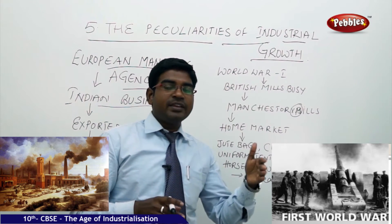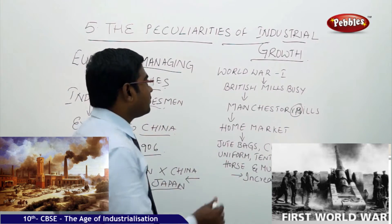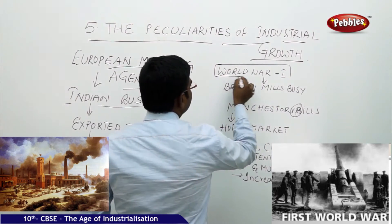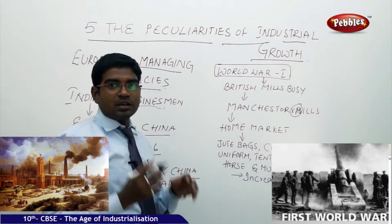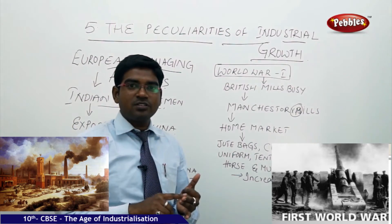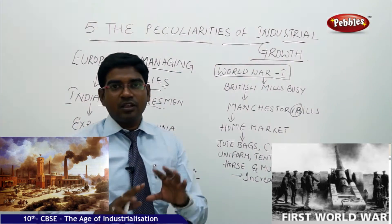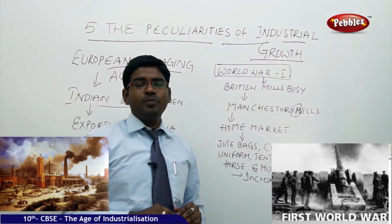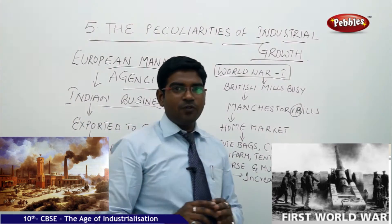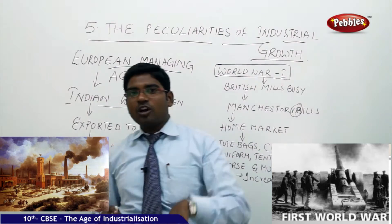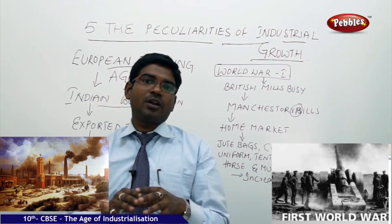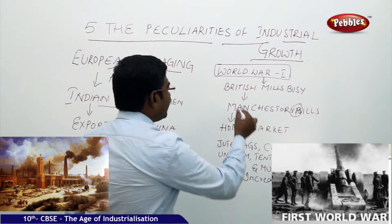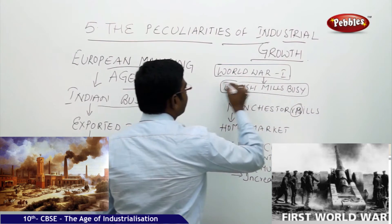Then suddenly there was a rise in business in the early phase of the 20th century, because of World War One. World War One was the situation which turned Indian production and Indian industries to a very large scale, where they were able to push their products into large local markets. How can a world war make local industries sell their products locally in a profitable way? It happened like this: when the British mills were busy producing for the world war...